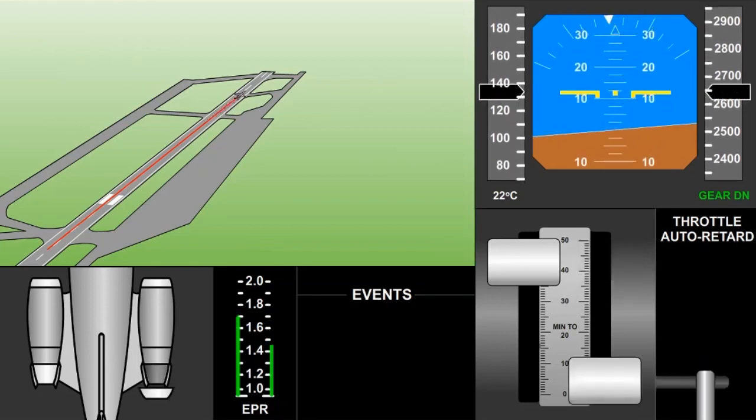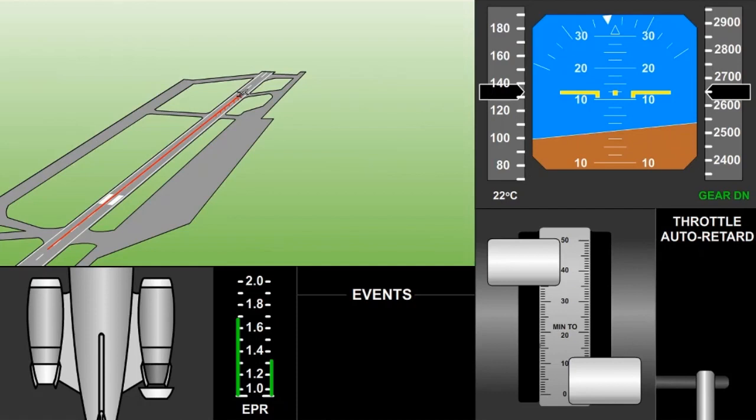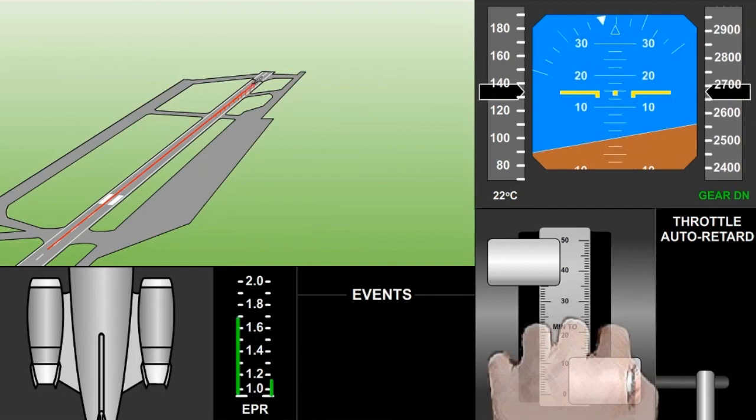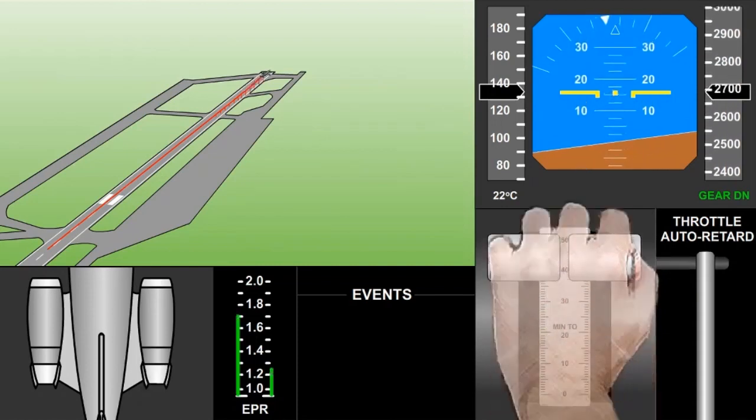The right thrust lever snapped to idle, and the airplane began to yaw to the right. The first officer fought to restore the lever to the full forward position against heavy resistance.